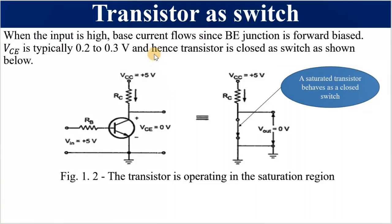Under such a scenario, the transistor is acting as a switch and the circuit is equivalent to a closed switch. When it acts as a switch, the voltage across it is equal to zero because it will be a wire — hence Vout is equal to zero. When the switch is turned on, the voltage across it is equal to zero. A saturated transistor behaves as a closed switch.